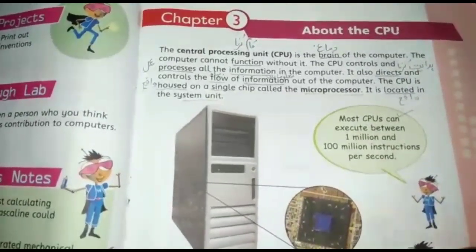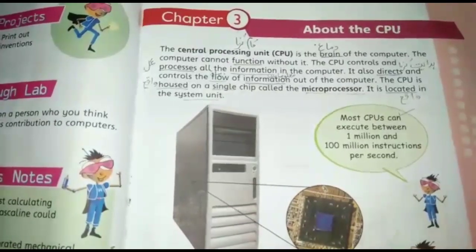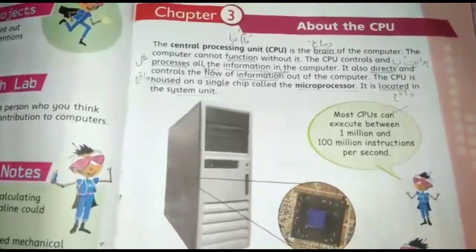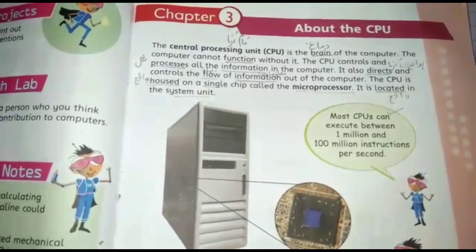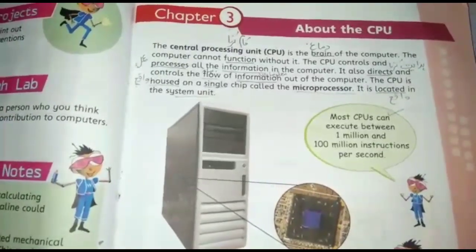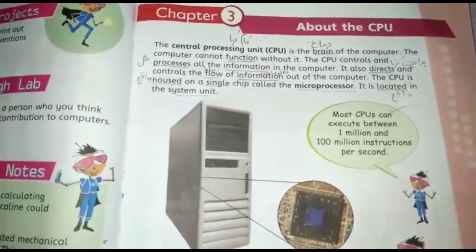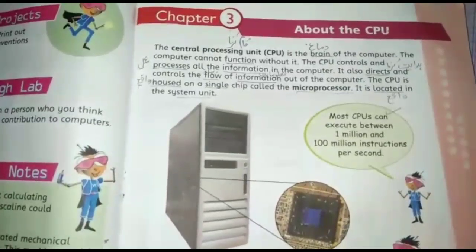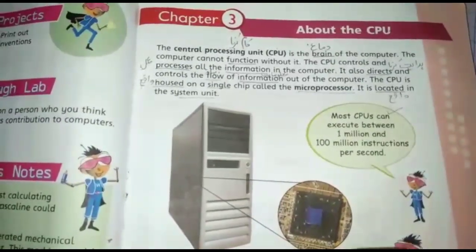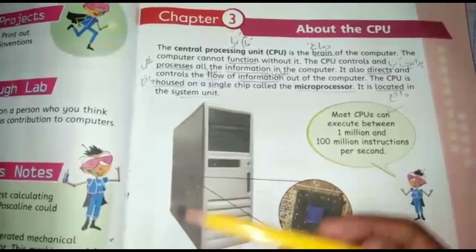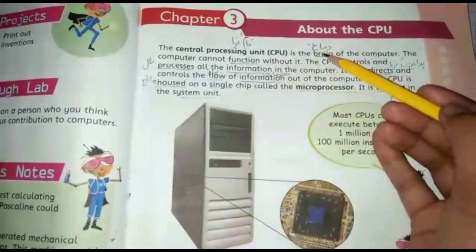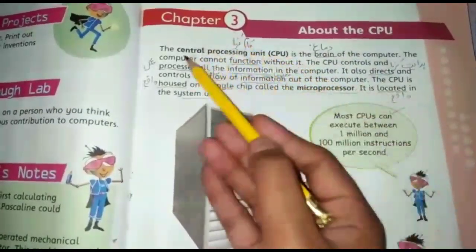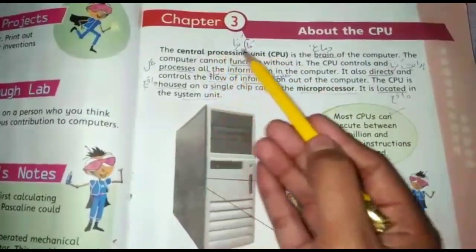We control our functions with our brain. If we don't have a brain then we can't do anything. So the brain is like the CPU. CPU stands for Central Processing Unit.